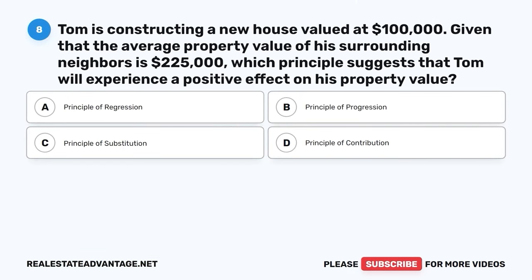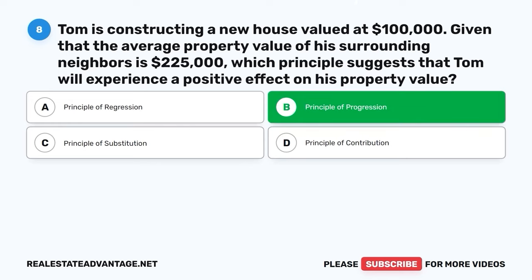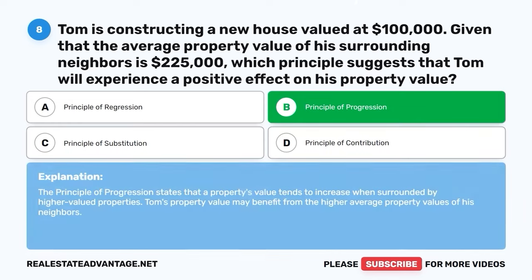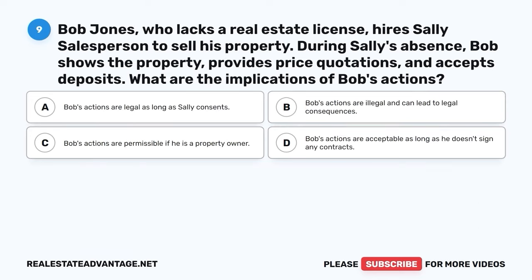Question 8. Tom is constructing a new house valued at $100,000. Given that the average property value of his surrounding neighbors is $225,000, which principle suggests that Tom will experience a positive effect on his property value? A. Principle of regression. B. Principle of progression. C. Principle of substitution. D. Principle of contribution. The correct answer is B: Principle of progression. The principle of progression states that a property's value tends to increase when surrounded by higher-valued properties. Tom's property value may benefit from the higher average property values of his neighbors.